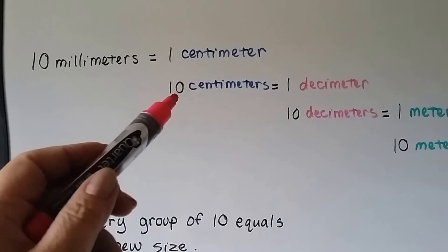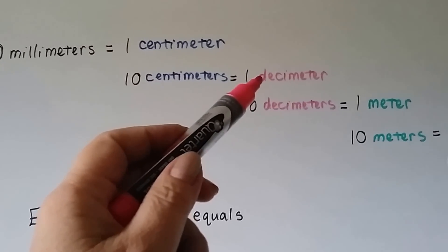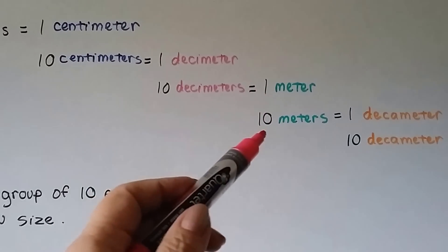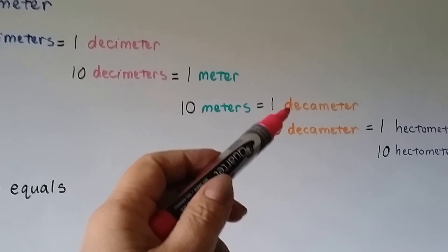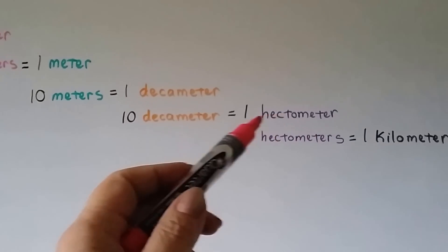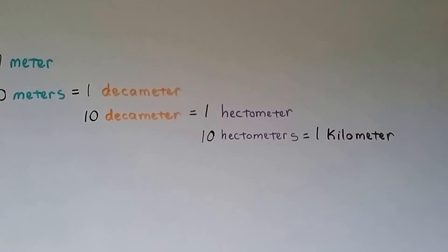When we get to 10 centimeters, that's one decimeter. When we get to 10 decimeters, now it turns into a meter. When we have 10 meters, it turns into a decameter. And 10 decameters equals a hectometer. And 10 hectometers equals one kilometer.